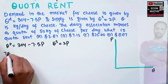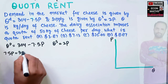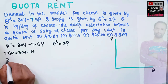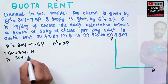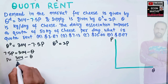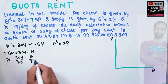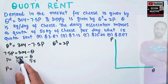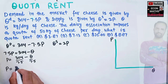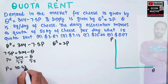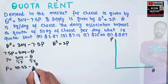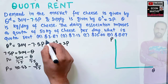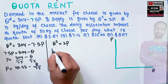From the demand function, 7.5p = 304 - q, which gives p = (304 - q) / 7.5. Dividing through, our inverse demand function is p = 40.53 - q/7.5. Let us also calculate the inverse supply function by solving for p.